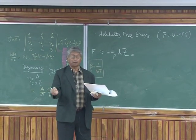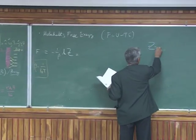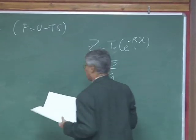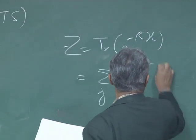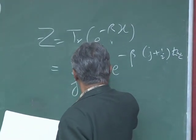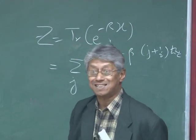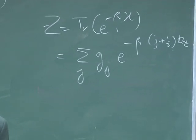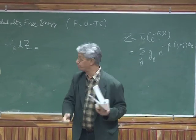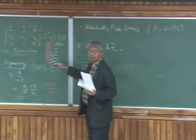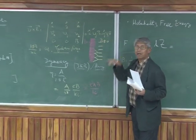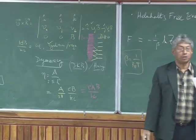So 1 over beta minus 1 over beta log of the partition function. And you can easily work out the partition function. Because we have the Hamiltonian. Just like harmonic oscillator calculation. Except that you have to put in the degeneracy. Because, remember, Z is trace e to the power minus beta H. So trace in this case is simply sum over j, because what we have is minus beta j plus half h bar omega c. This is sum over all j.